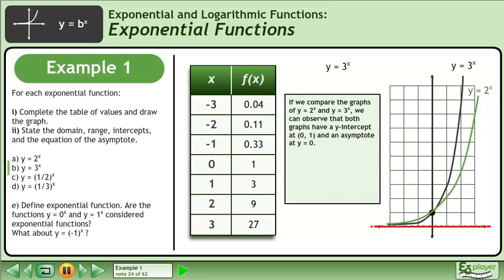If we compare the graphs of y equals 2 to the x and y equals 3 to the x, we can observe that both graphs have a y-intercept at (0, 1) and an asymptote at y equals 0. The graph of y equals 3 to the x is higher than y equals 2 to the x for positive x values, and lower than y equals 2 to the x for negative x values.